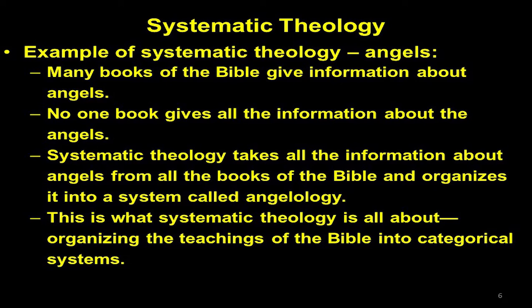To give you an example of what systematic theology is, let's take into account a subject that we find in the Bible — for example, angels. If you look at angels and where and when and how it is discussed in Scripture, many books of the Bible give us information about angels. However, no one book in its totality gives us all information about angels. Therefore, what systematic theology does is it takes all the information about angels from all of the books of the Bible and organizes it into a system called angelology — a subheading of systematic theology.